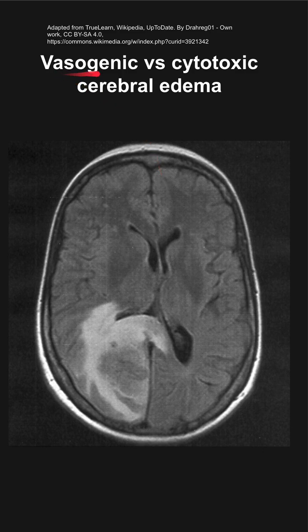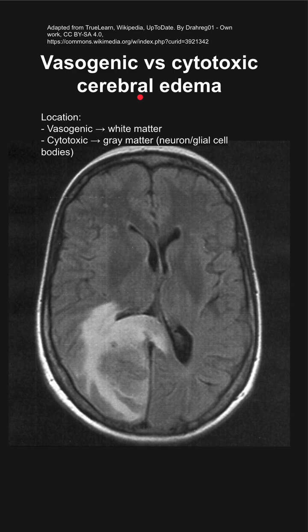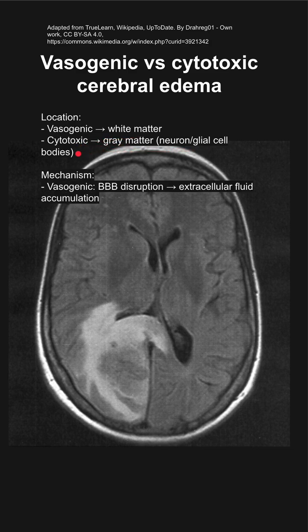This is a comparison of vasogenic and cytotoxic cerebral edema. The location differs. In vasogenic cerebral edema you're primarily affecting the white matter, whereas in cytotoxic you're primarily affecting the gray matter, with the neuron or glial cell bodies being affected.